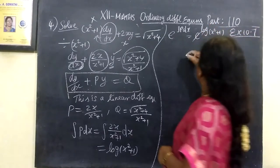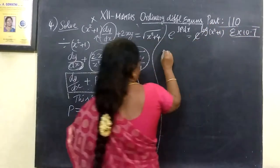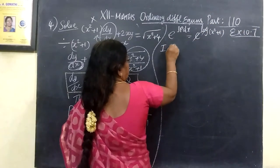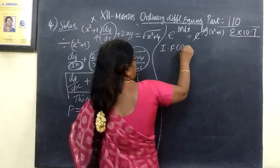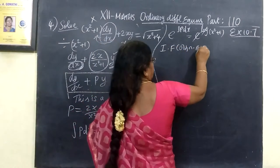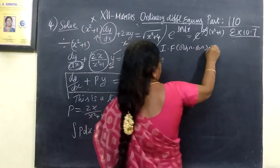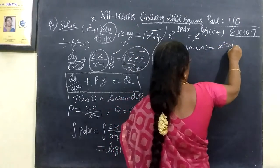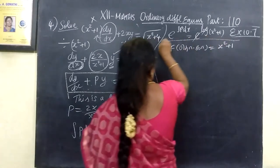e to the power log of x squared plus 1. e log cancels. Therefore, the integrating factor is equal to x squared plus 1.